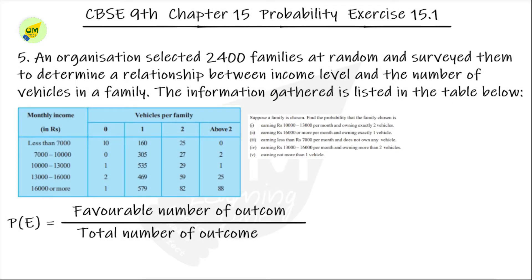An organization selected 2400 families at random and surveyed them to determine a relationship between income level and the number of vehicles in the family. The information gathered is listed in the table. The table shows monthly income categories: less than 7,000; 7,000 to 10,000; 10,000 to 13,000; 13,000 to 16,000; and 16,000 or more.